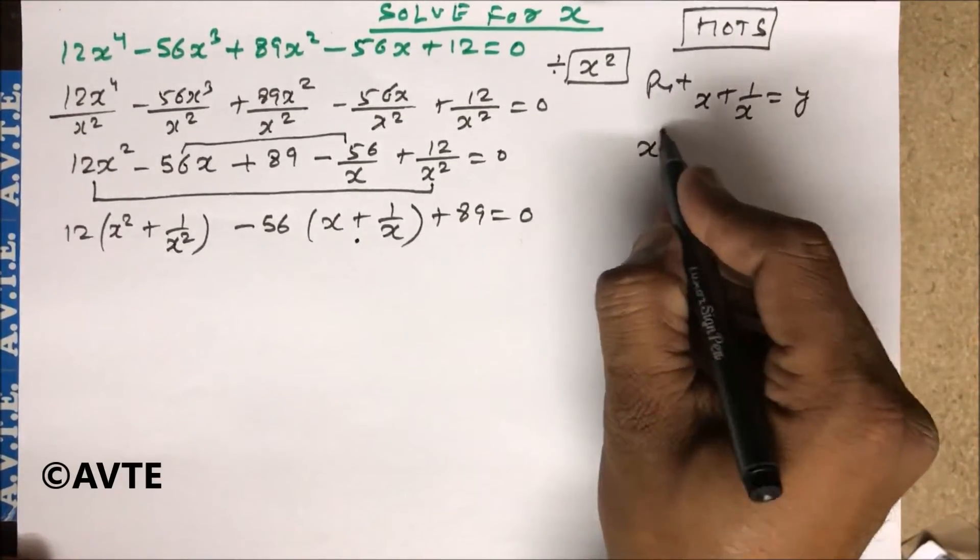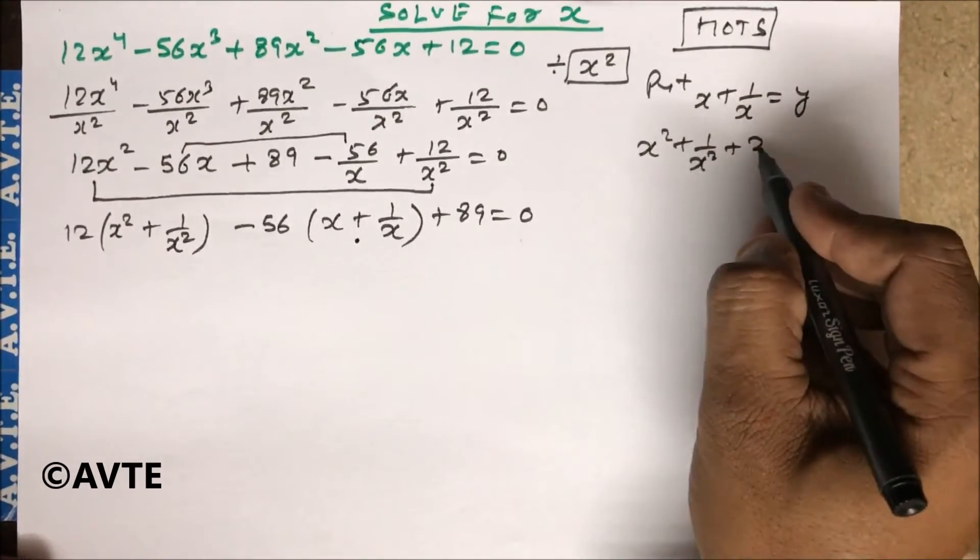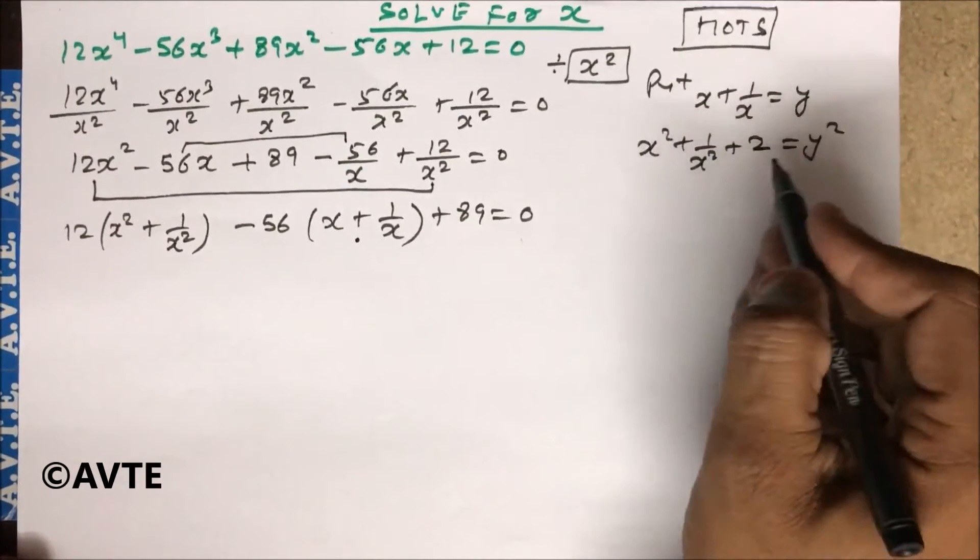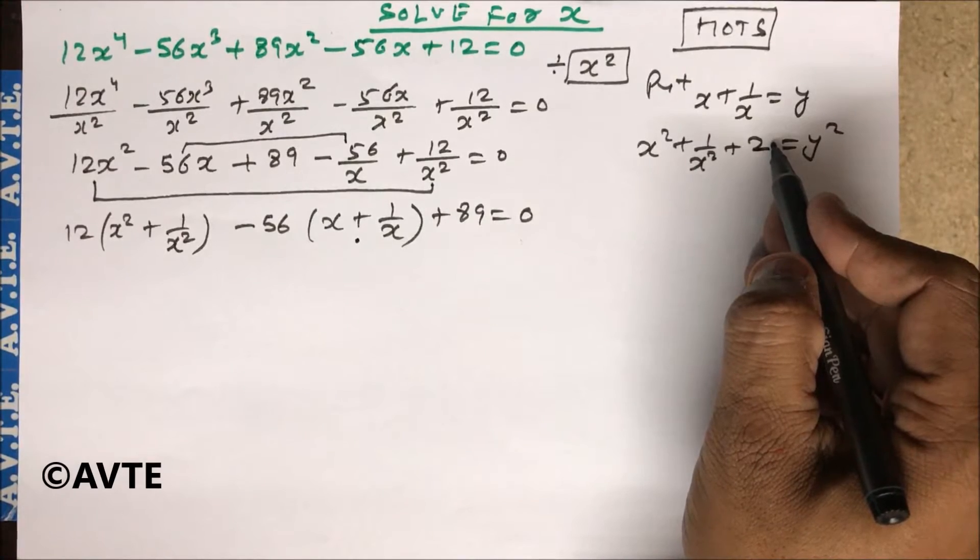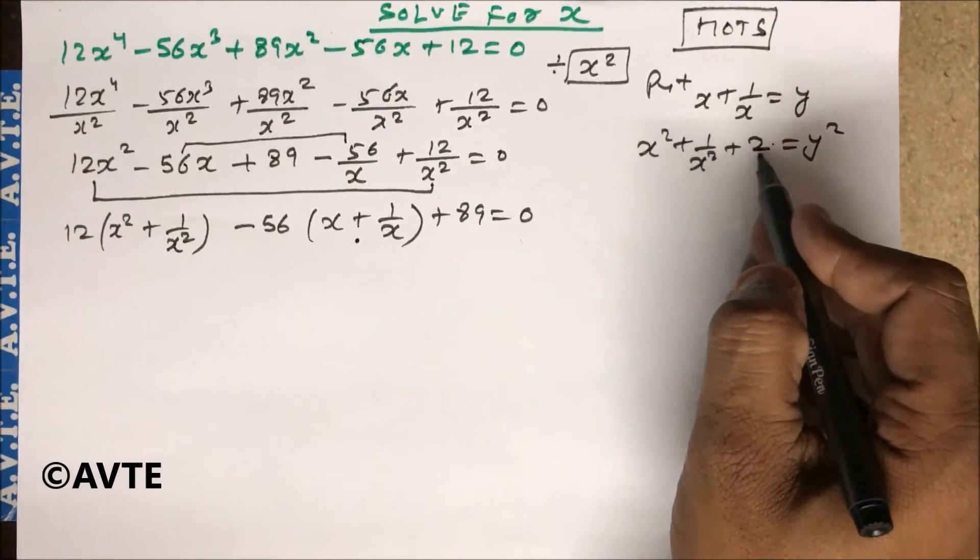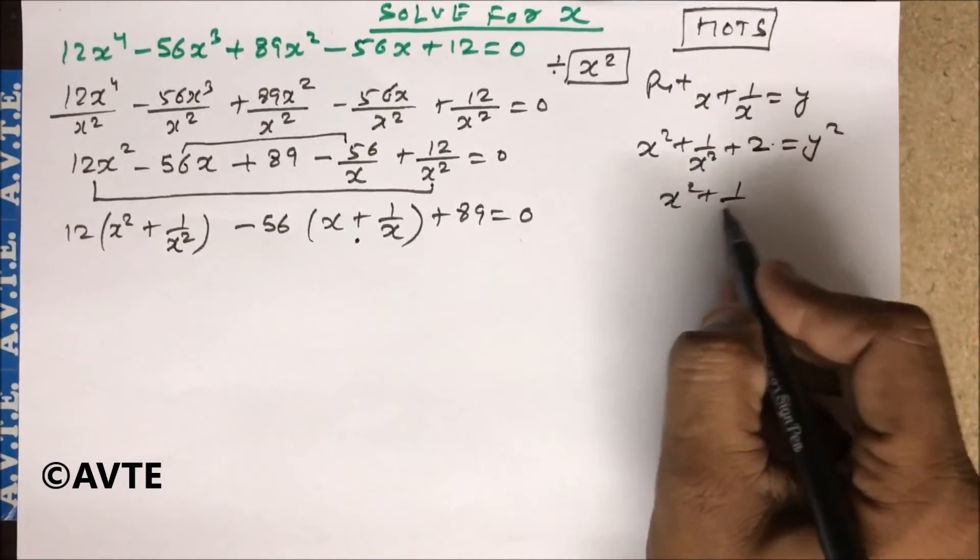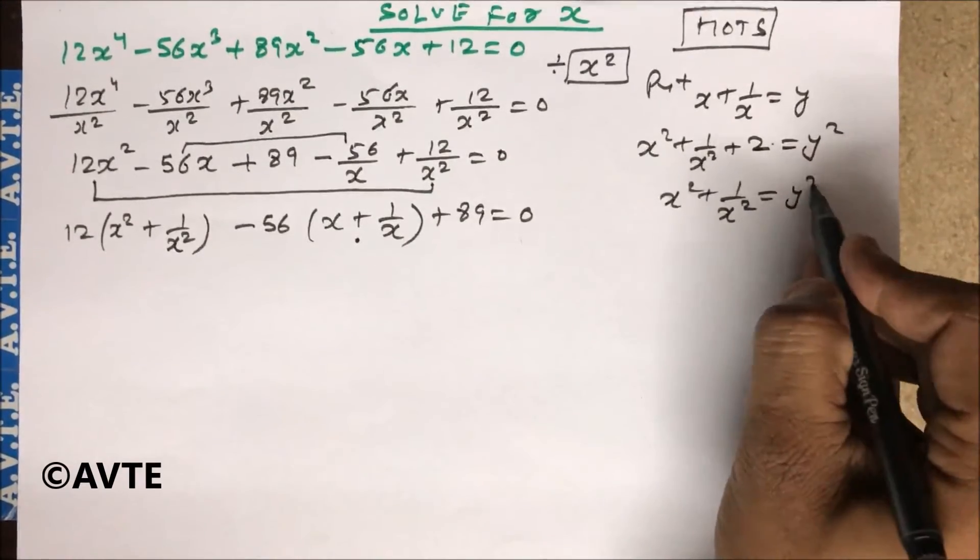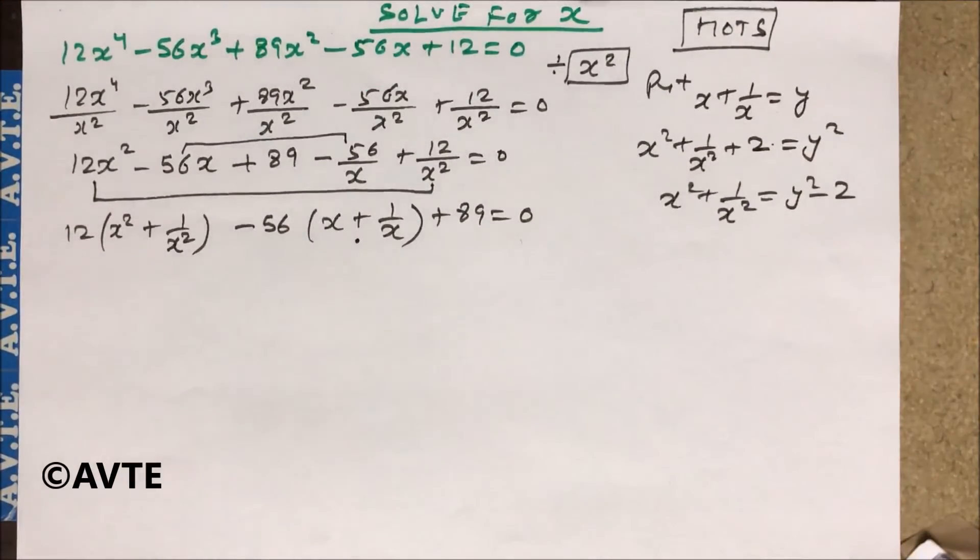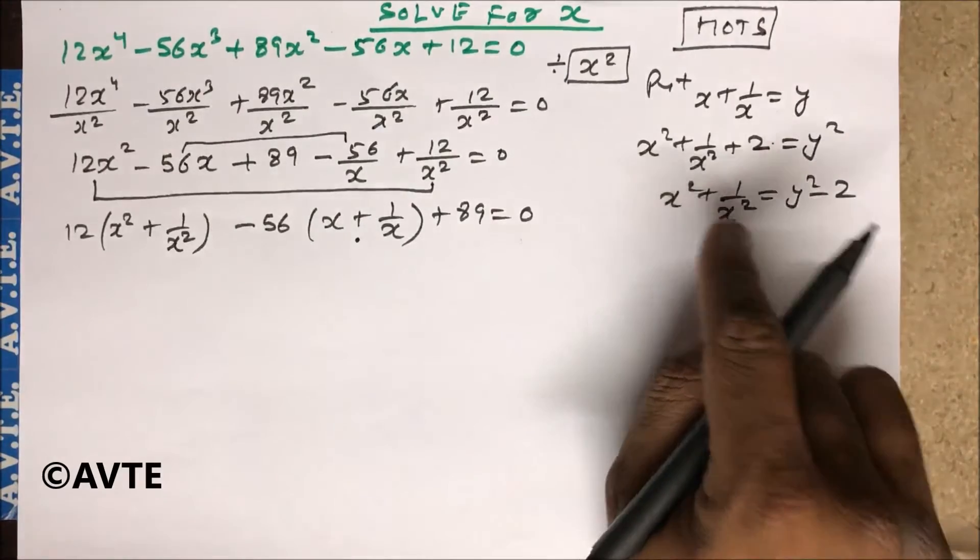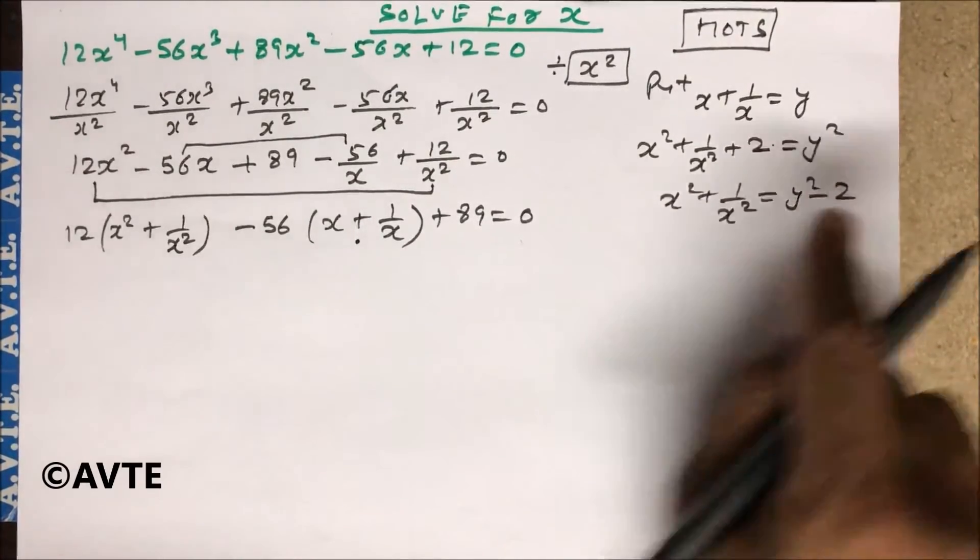We square it. That x and 1/x will be cancelled. a² + b² + 2ab. Now we put the value of x² + 1/x² = y² - 2 in this.